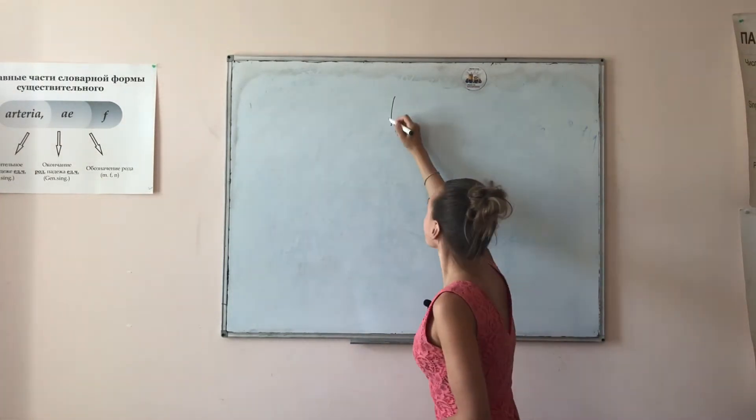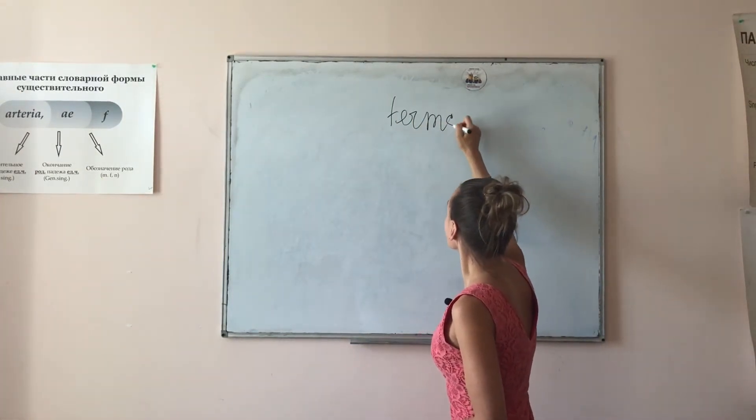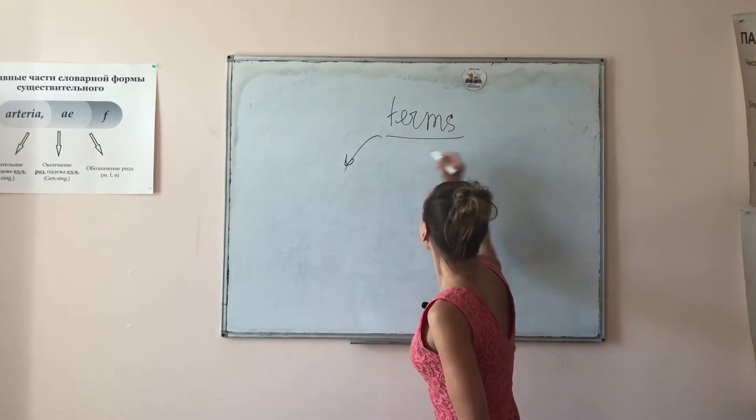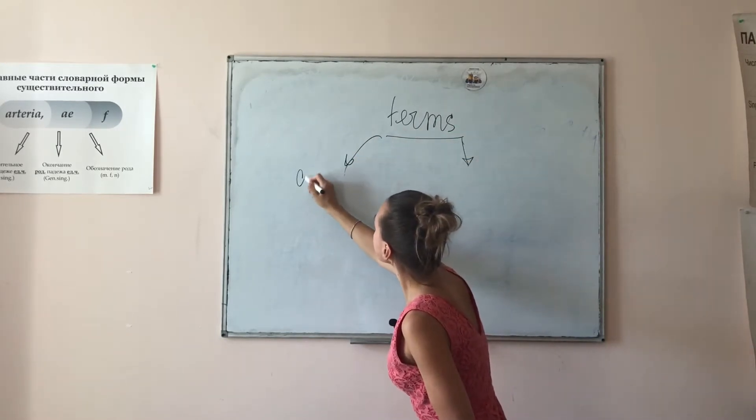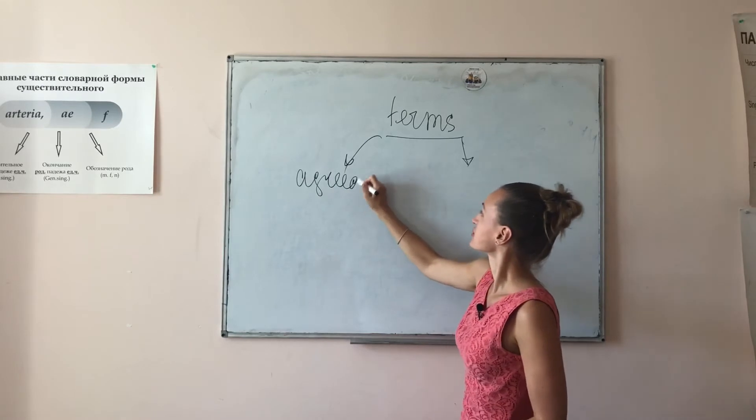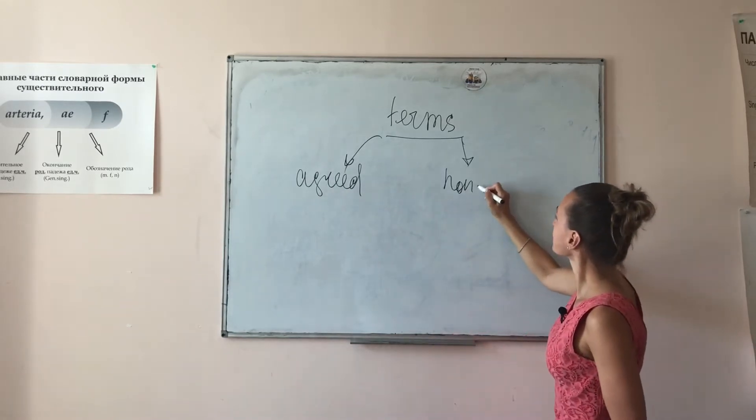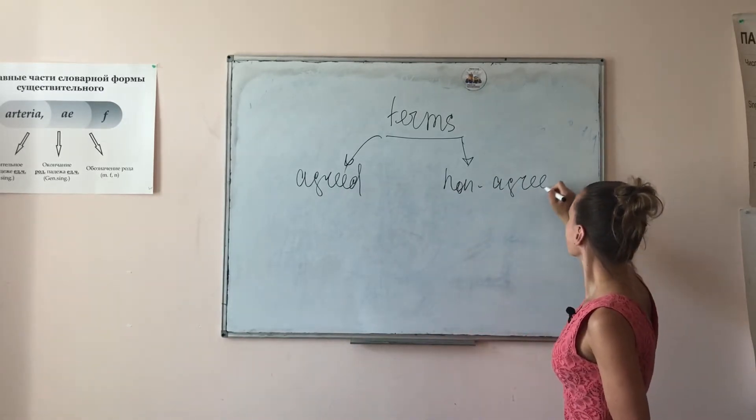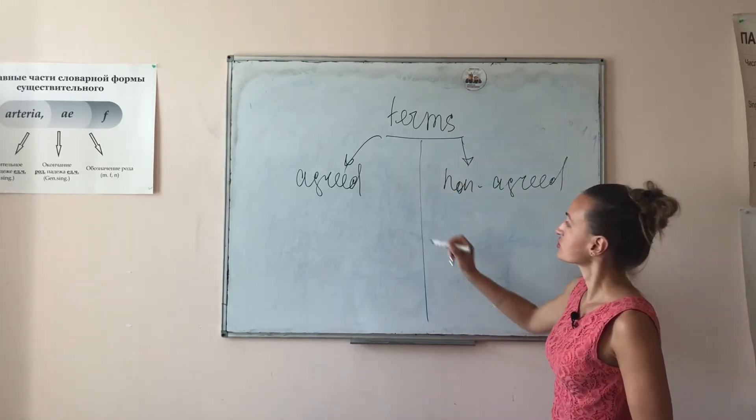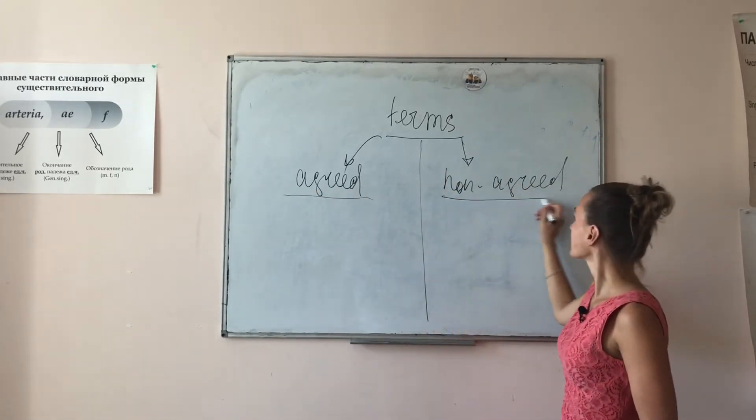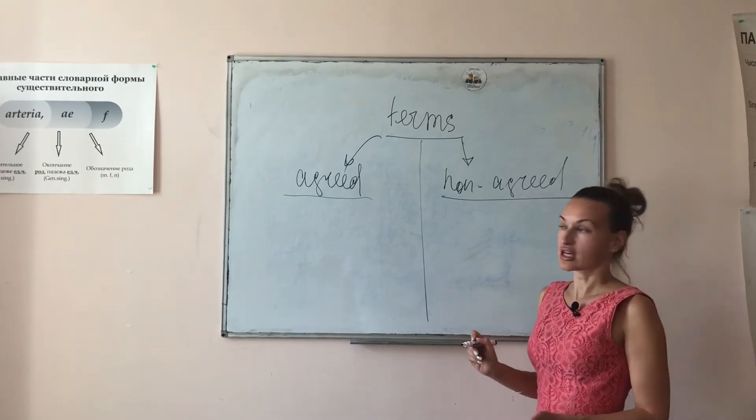There are two types of terms: anatomical terms. They can be agreed and non-agreed. So from the words you have already seen that something has to be agreed with something.